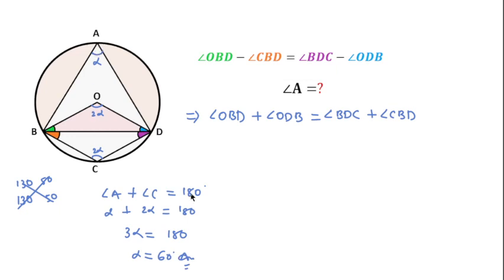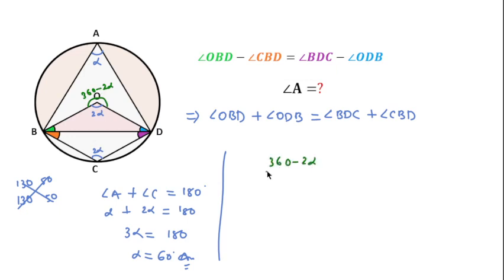For the sum of angle A and angle C to be 180°, recall that the angle made on the same segment is half the angle made at the center. For this segment, the inscribed angle is 2α, so the central angle on the other arc is 360° minus 2α. The inscribed angle on that arc is half of that: (360° − 2α) / 2 = 180° − α. Setting this equal to 2α gives 3α = 180°, so α = 60°.